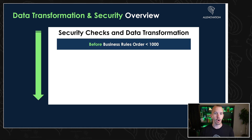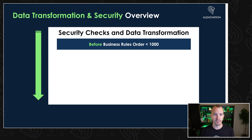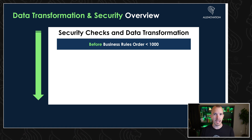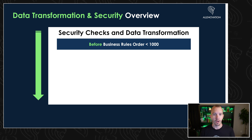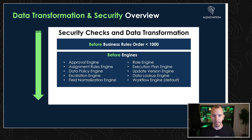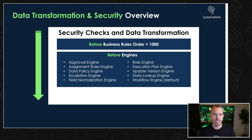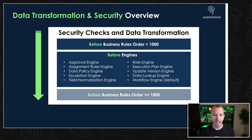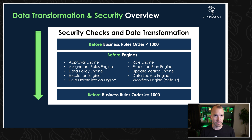Before business rules will kick off. In your business rules on the platform, you can choose 'before' and set the order. If the order is less than 1000, those business rules fire for that table and record. Then these engines go off before the record even lands in the database: the approval engine, data policies, the role engine, the data lookup engine, the legacy workflow engine, and those workflows. Then before business rules with an order greater than or equal to 1000 fire off.